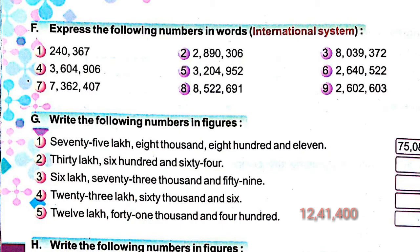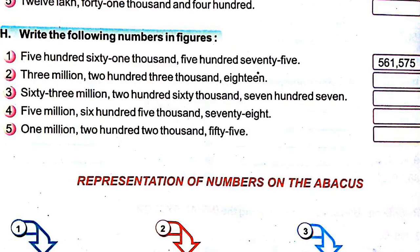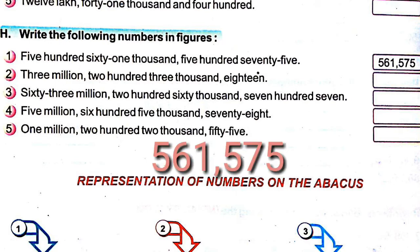Next is question H — write the following numbers in figures, given in the international system. The question reads: five hundred sixty-one thousand five hundred seventy-five. In the thousands period 561 and in the ones period 575, so the number is 561,575.